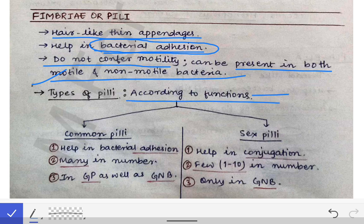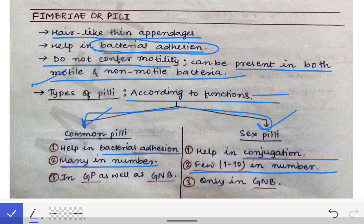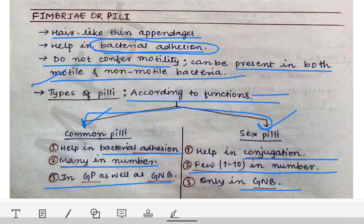We have two types of pili according to their functions: common pili and sex pili. Common pili help in bacterial adhesion, while sex pili help in conjugation. Common pili are many in number, whereas sex pili are few — only one to ten. Common pili are present in both Gram-positive and Gram-negative bacteria, but sex pili are present only in Gram-negative bacteria.